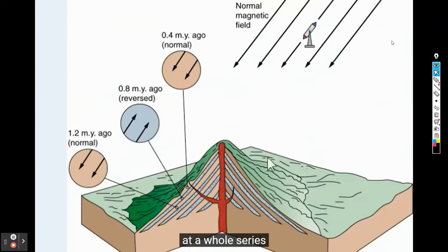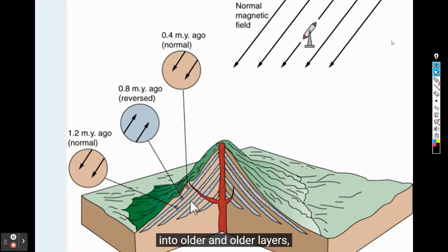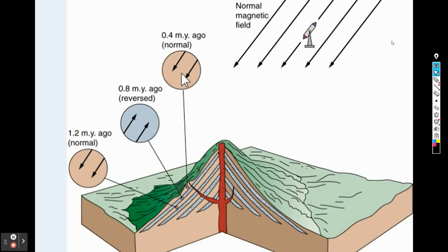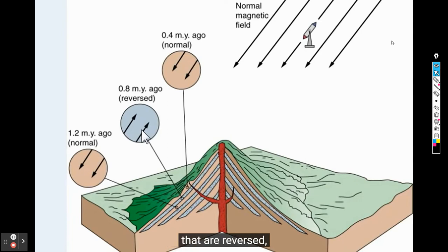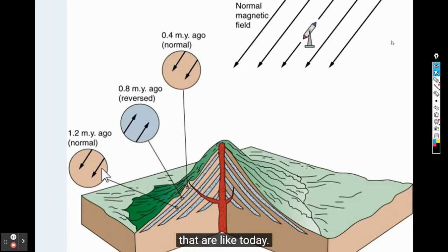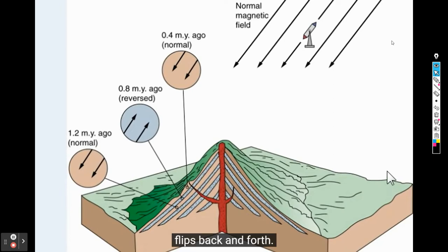If we sample through lava layers into older and older layers, we find some layers oriented with today's magnetic field, older layers that are reversed, and still older layers like today. Through geologic time, the Earth's magnetic field flips back and forth — we call these magnetic polarity reversals.